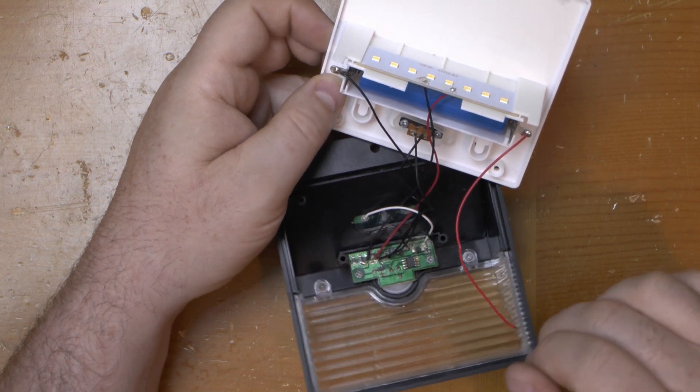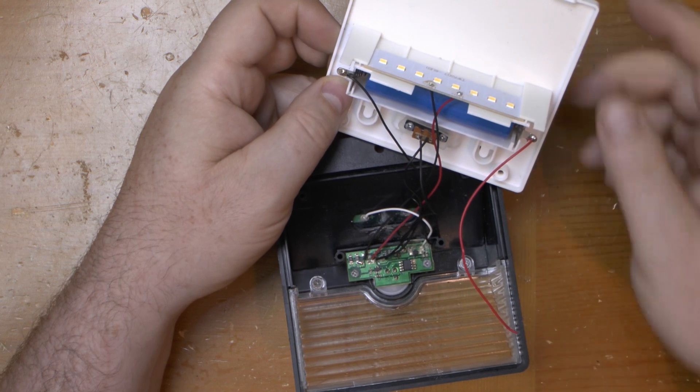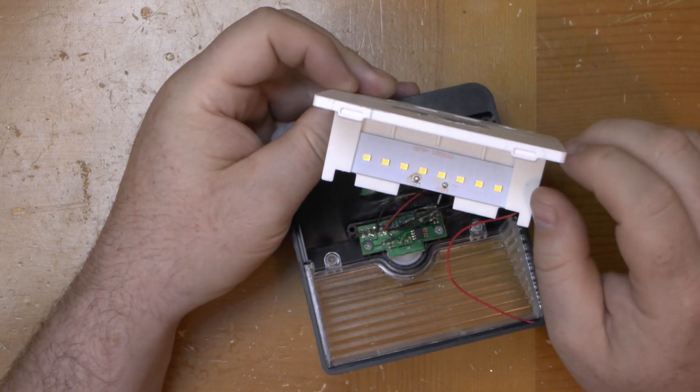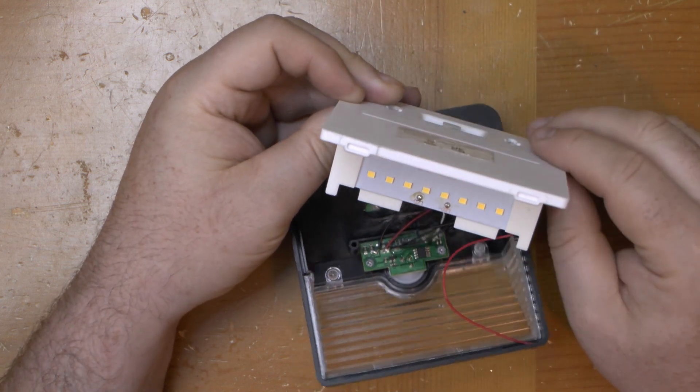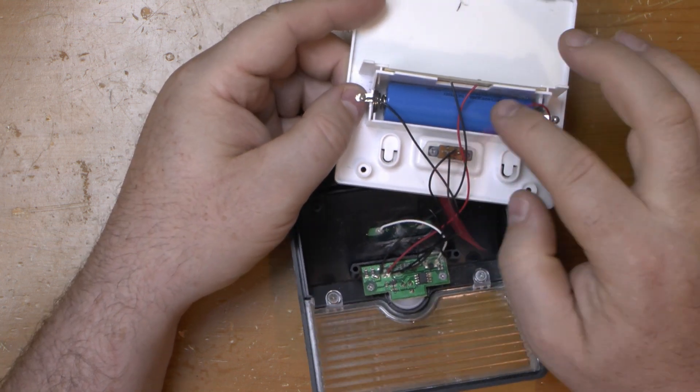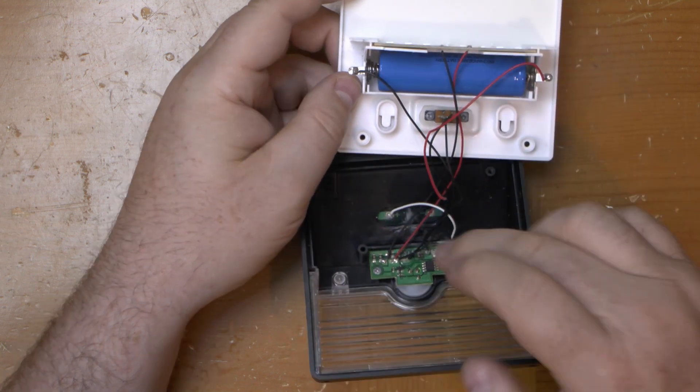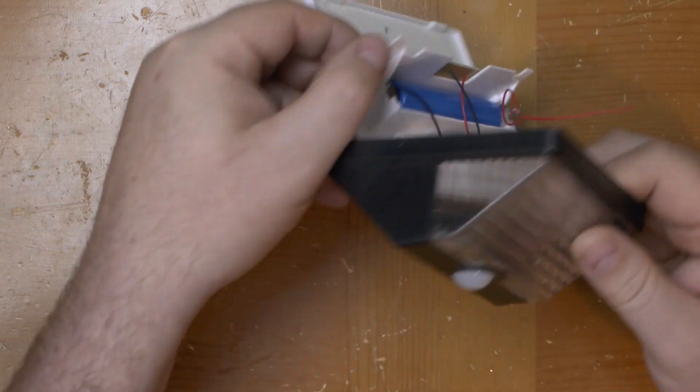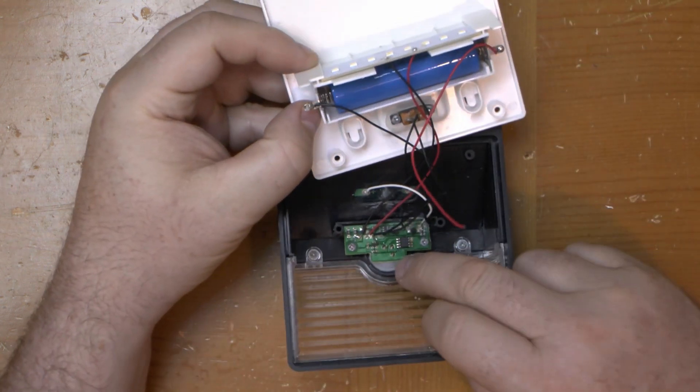On here you can see it's got eight LEDs. I'll check the connections out shortly. We've got the cell, there's an on-off switch, that is the back of the solar panel.